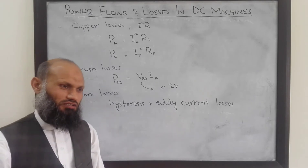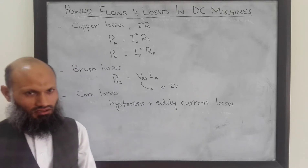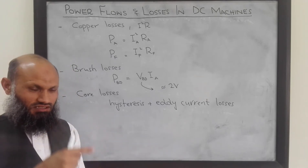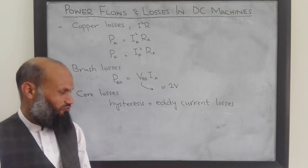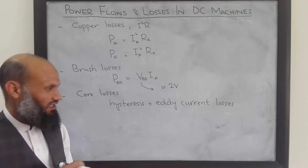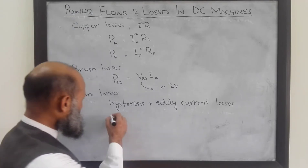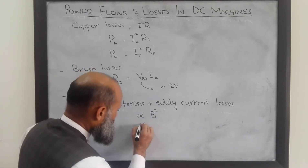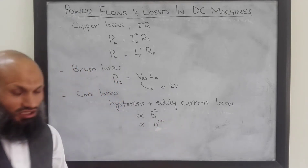In some cases we also laminate the stator of the DC machine — for example, when achieving speed control, you do not supply a constant DC voltage but rather a fluctuating, generally pulse-width-modulated (PWM) voltage, which results in eddy current losses in the stator as well. It has been experimentally found that these core losses are proportional to the square of the flux density in the machine and also proportional to the 1.5th power of the rotational speed.